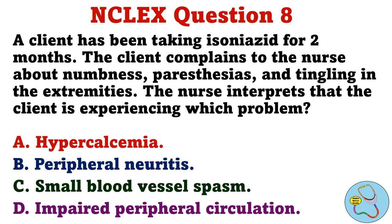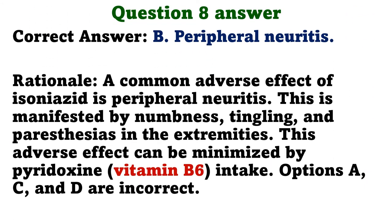Question 8. A client has been taking isoniazid for 2 months. The client complains to the nurse about numbness, paresthesias, and tingling in the extremities. The nurse interprets that the client is experiencing which problem? A. Hypercalcemia. B. Peripheral neuritis. C. Small blood vessel spasm. D. Impaired peripheral circulation. The correct answer is B. Peripheral neuritis. Rationale. A common adverse effect of isoniazid is peripheral neuritis, manifested by numbness, tingling, and paresthesias in the extremities. This adverse effect can be minimized by pyridoxine intake. Options A, C, and D are incorrect.